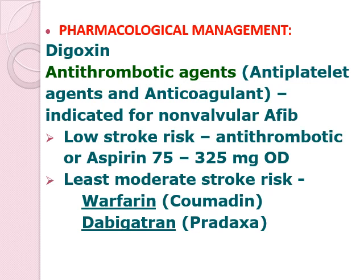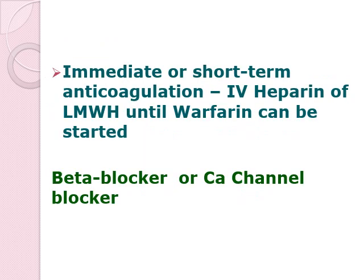For clot formation management: if low risk, you can have aspirin 75 to 325 mg once daily. For at least moderate stroke risk, you can have warfarin and dabigatran. Dabigatran is among the newer antiplatelet medications available. You can give immediate or short-term anticoagulation by using IV heparin or low molecular weight heparin until warfarin can be started. You can also give beta blockers or calcium channel blockers, which are intended to slow down the heart rate of your patient, as in these dysrhythmias there is an increase of heart rate.